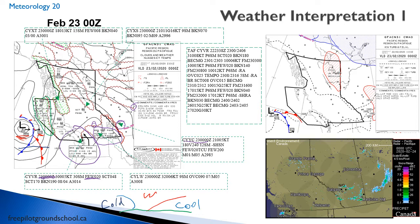Let's move up north to Prince George YXS. If we look at the GFA in that area, they're calling scattered at bases at 7,000, tops at 9,000 — nice weather, plus six statute miles visibility. The actual METAR shows gusty winds at 210/11 gusting 16, nine statute miles, broken at 7,000 feet. That's better than six statute miles and pretty much exactly what they were forecasting. Mind you, the METAR is AGL and the GFA says ASL, but it's still kind of within the same ballpark. That forecast looked reasonably good.